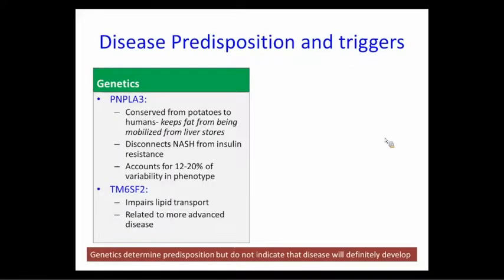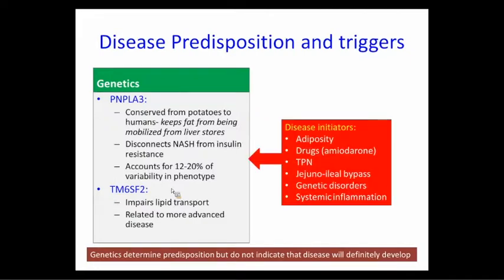Regarding disease initiation: here are some genetic predispositions that increase risk. PNPLA3 is a triglycerol lipase, and the proportion of populations with this mutation varies — the Hispanic population has the highest incidence at about 30%. It's not something we routinely check for; it's more for clinical trials and not a simple lab test we can draw here. TM6SF2 (Transmembrane 6 Super Family 2) has to do with VLDL transport out of the liver — those with the mutation have trouble getting fat out of the liver.